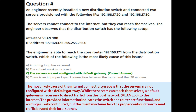The engineer is able to reach the core router at 192.168.17.1 from the distribution switch. Which of the following is the most likely cause of this issue? Option A: a routing loop has occurred. Option B: the subnet mask is incorrect. Option C: the servers are not configured with a default gateway. Option D: there is an improper Layer 1 connection between the router and the ISP modem. The correct answer is option C.